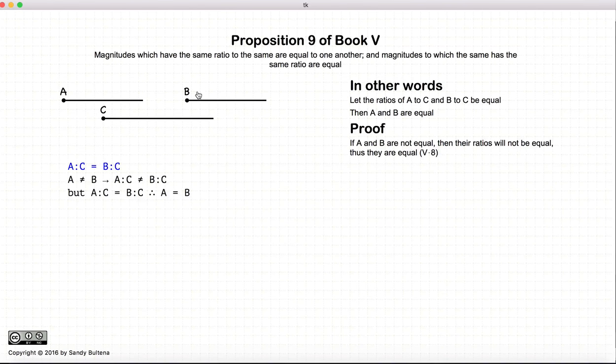Now, if a and b are not equal, then we would show that a to c would not be equal to b to c according to Proposition 8. So let me repeat. We have a to c is equal to b to c. However, if a is not equal to b, then a to c is not equal to b to c, which violates our original condition. So therefore, a must equal b.